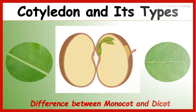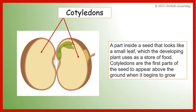Cotyledon refers to the significant part of the embryo found within the seed. It is the first and tender leaf that emerges when the seed germinates. It is also called the storage unit of a seed, as it provides nutrients to the different parts of an embryo. Cotyledons are the first parts of the seed to appear above the ground when it begins to grow.